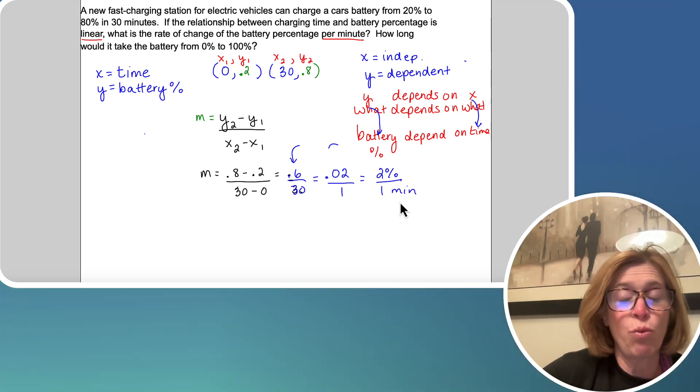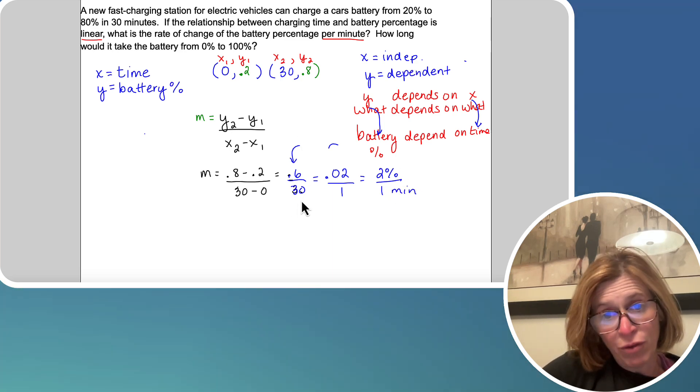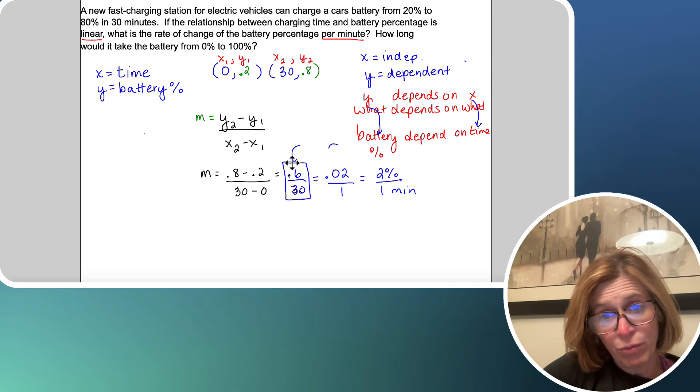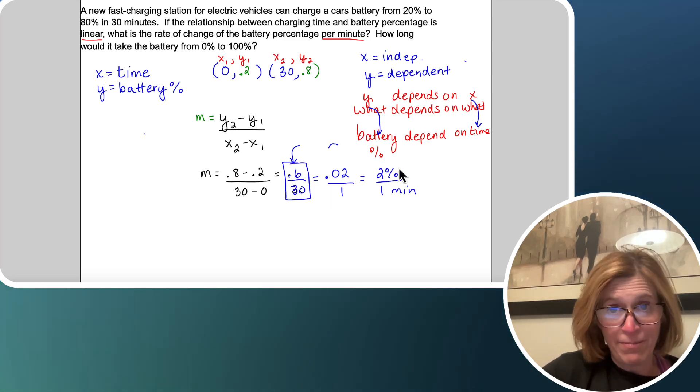So that means I have a battery percent of 2% every one minute. So that is my rate of change. Now notice 0.6 over 30, that's your slope. But my rate of change, I needed my denominator to be 1.